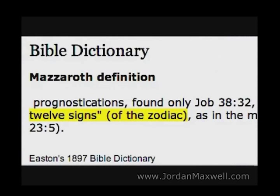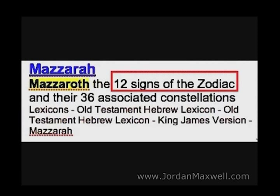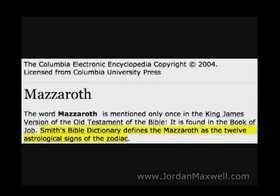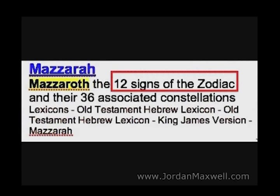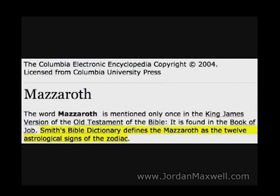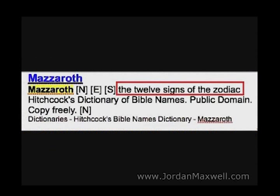Bible dictionaries confirm this. The Easton Bible Dictionary says Mazaroth is the twelve signs of the Zodiac. Another Bible dictionary Hebrew lexicon also says Mazaroth is the twelve signs of the Zodiac. Smith's Bible Dictionary defines Mazaroth as the twelve astrological signs of the Zodiac. So what this is saying is that the scripture says God created Mazaroth — the twelve astrological signs of the Zodiac.